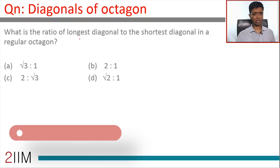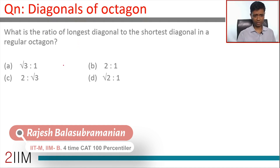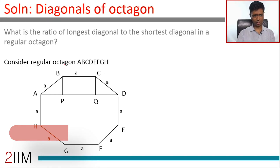What is the ratio of the longest diagonal to the shortest diagonal in a regular octagon? It's a wonderful question — a tricky question and a good one to look at all the properties of regular octagons. Let's draw this octagon.